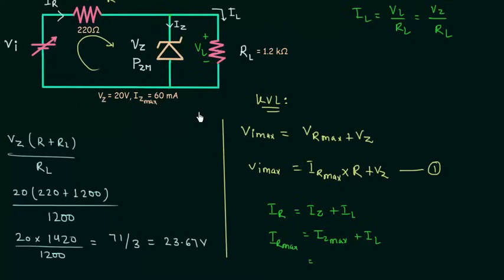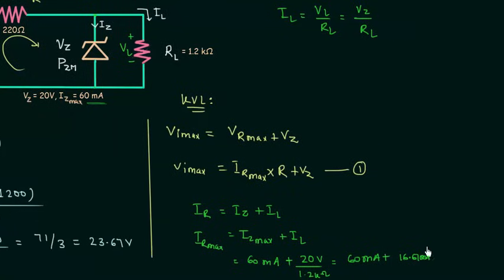IZ maximum is equal to 60 milliamps, already given in the problem. So we have 60 milliamps plus IL, which is equal to VZ divided by RL. VZ is 20 volts, RL is 1.2 kilo ohms. So finally we have 60 milliamps plus 16.67 milliamps. When you add these two values, you will have 76.67 milliamps.